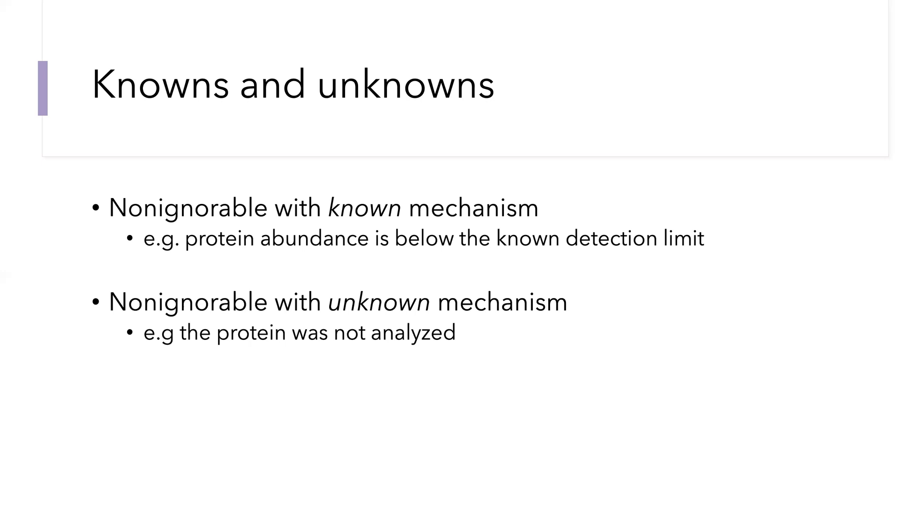A much more challenging situation is when we have non-ignorable missingness with an unknown mechanism. For example, when the protein is not analyzed, we know that this is a strongly abundance dependent process, but it's very difficult to specify precisely what that probabilistic missingness mechanism looks like.